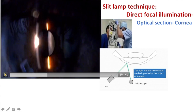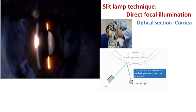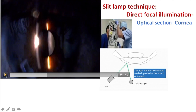When you make the width very small, you can increase the illumination as well. The aim of the optical section of the cornea is to know the layers of the cornea, and of course, if there is a pathology — like an opacity — to know which part of the cornea has that opacity or dystrophy. That can be known by making a thin slit in a magnified view.